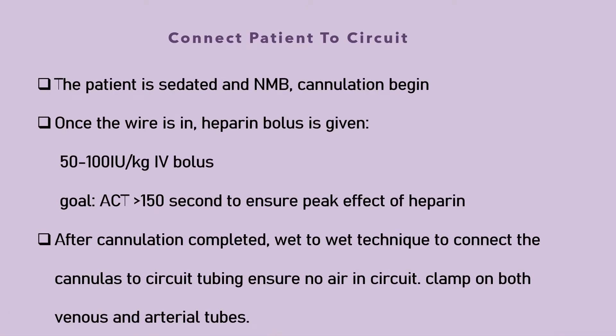Connecting the patient to the circuit: the patient should be sedated and having neuromuscular blockade while the cannulation begins. Once the wire is in, we can give heparin bolus 50 to 100 international units per kg IV bolus. The goal is to achieve ACT or activated clotting time more than 150 seconds to ensure the peak effect of heparin. After completing the cannulation, we can use wet-to-wet technique to connect cannulas to the circuit.